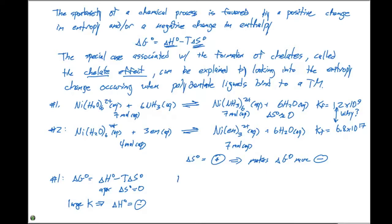In reaction number two, we see a huge increase in the formation constant. That tells us delta H0 is also negative, and we also know that delta S0 is going to be positive. So if we have delta G0 equals delta H0 minus T delta S0, and this is negative and this is positive, this is driven by enthalpy and entropy.